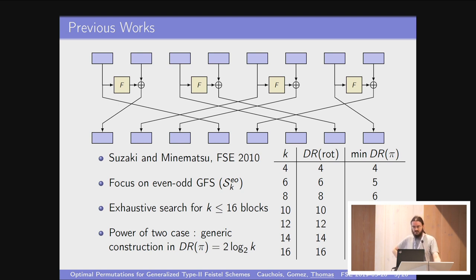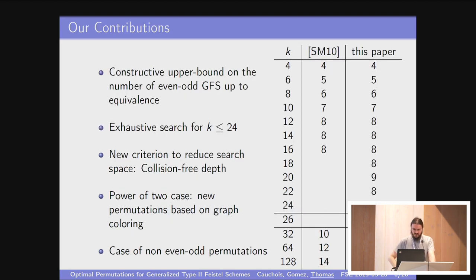They conducted a search of permutations for two to sixteen blocks and proved that by using a different permutation, you can actually have a much faster diffusion. Moreover, they gave a generic construction with a diffusion logarithmic in the number of blocks.